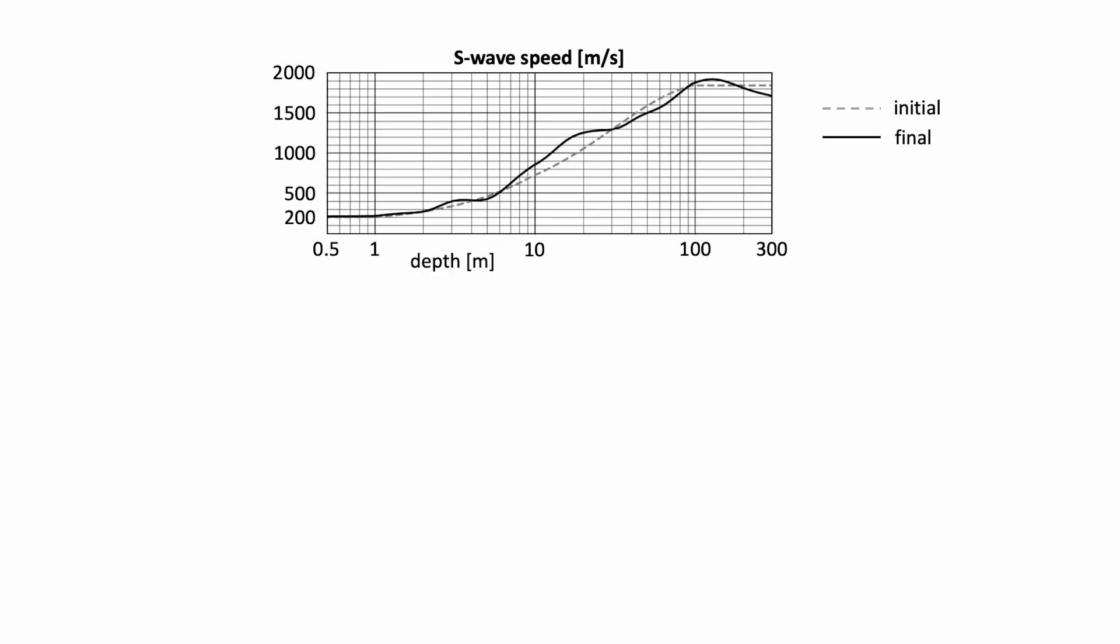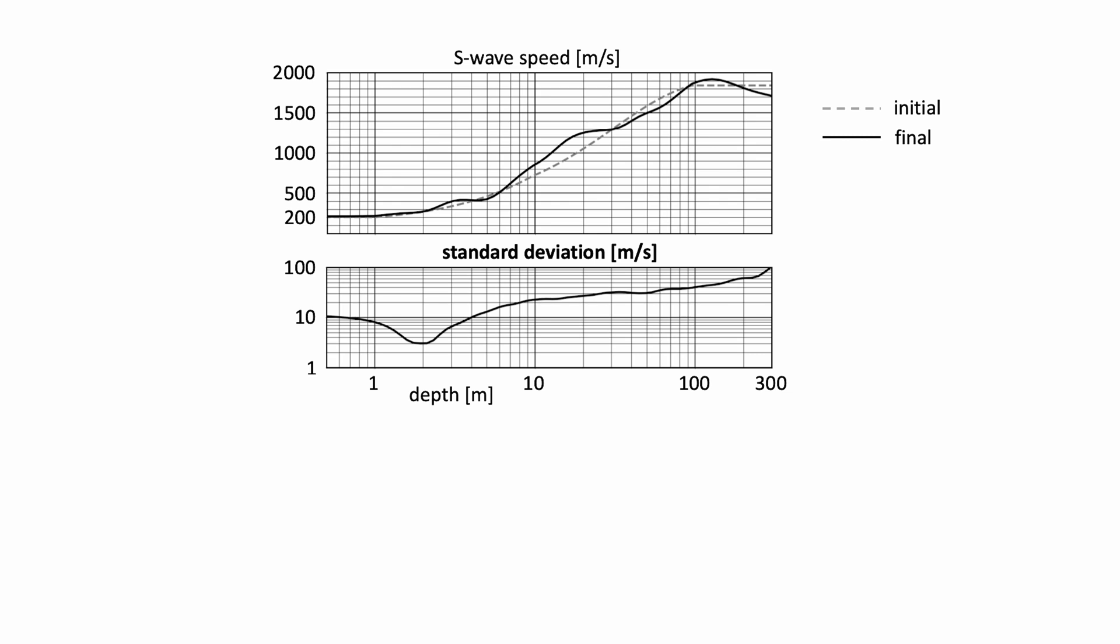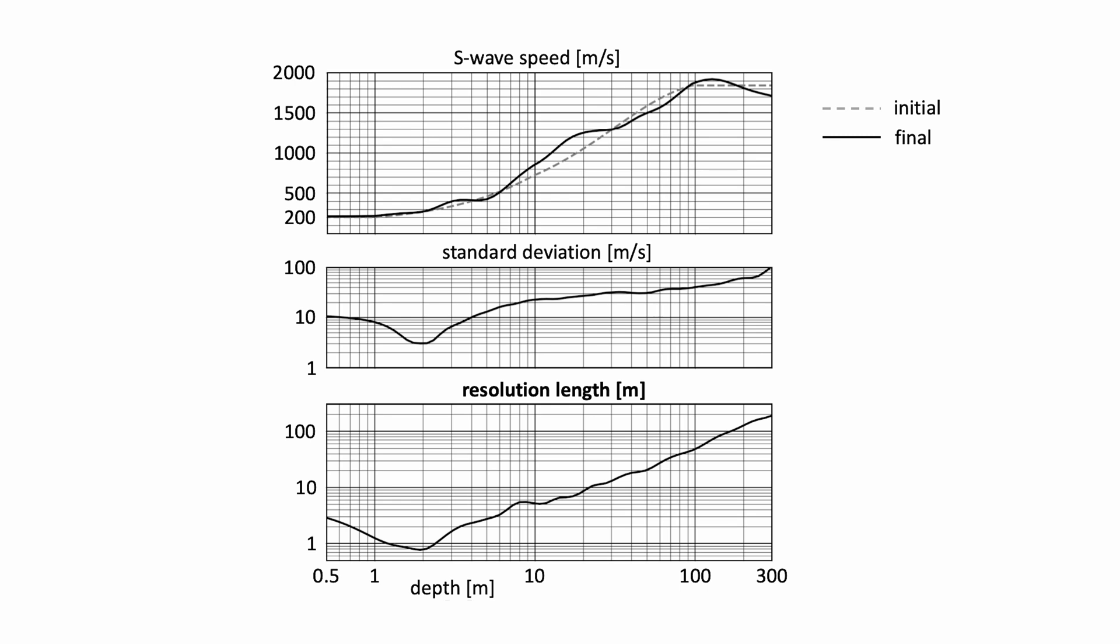The exceptional quality of these data allows us to constrain the S-wave speed in the upper part of the ice sheet with unprecedented accuracy. Error standard deviations of the S-wave speed are as low as a few meters per second for resolution length on the order of just one meter.